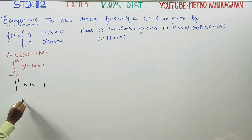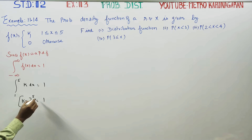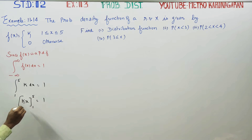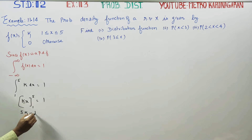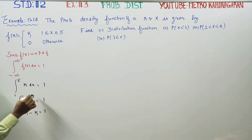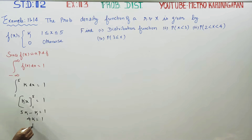Then, k times integrate: you will get kx from 1 to 5 is equal to 1. Upper limit minus lower limit: 5k minus k equals 4k is equal to 1. Now, k is equal to 1 by 4. This is the first answer.